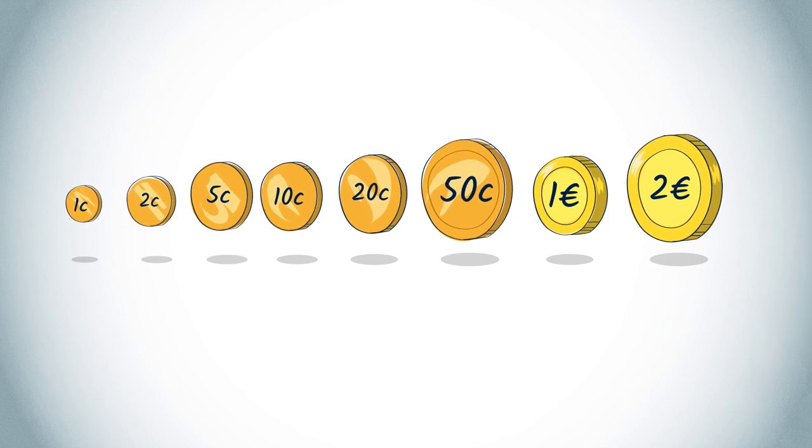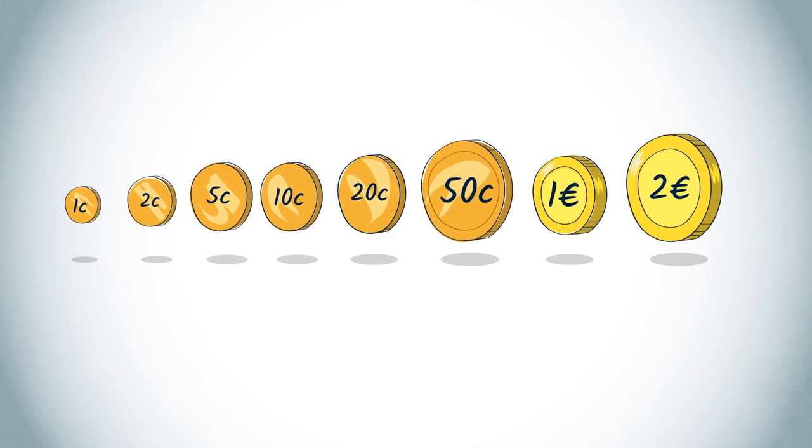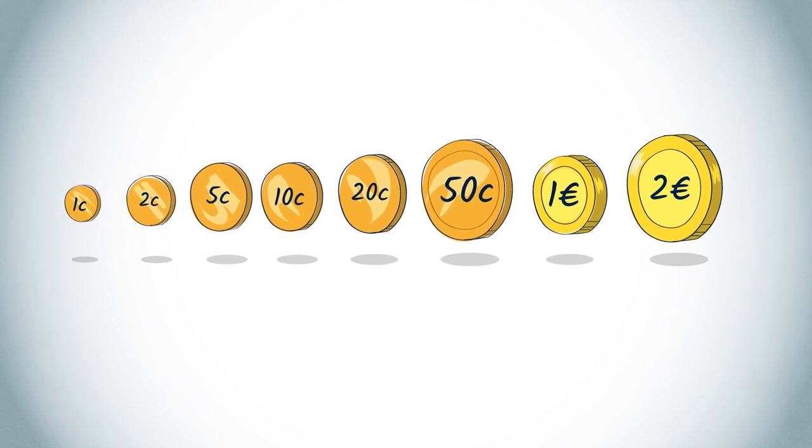A typical greedy algorithm is to select the coin with the highest possible value inferior to the sum that needs to be reimbursed, up to the point where the remaining change to be given is zero.